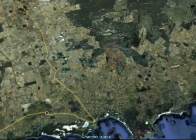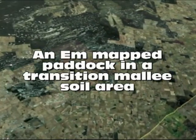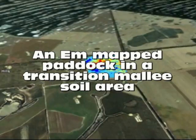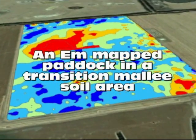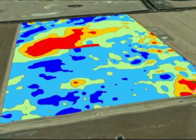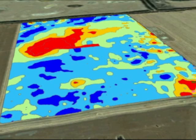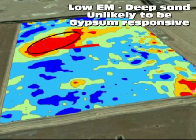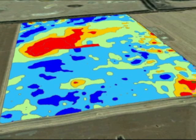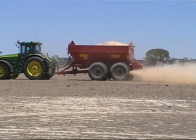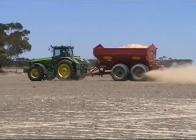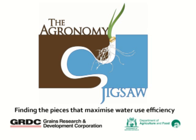As a consequence, a paddock EM map can start picking up areas which are potentially gypsum responsive and areas which have a lower chance of being responsive to gypsum. Using this paddock variability, it's possible to start portioning gypsum to areas which require it or perhaps are not going to respond to it. This is the principle behind using EM maps to define areas which are potentially gypsum responsive and make a variable rate gypsum map.